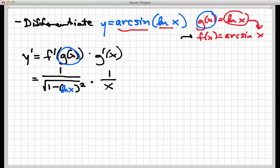There's not really much we can do to simplify that, other than to just put the fractions together by multiplying. So the final result here is 1 over x times 1 minus natural log x squared.